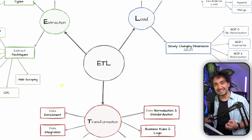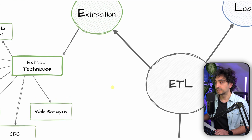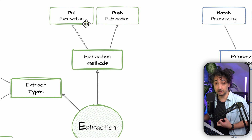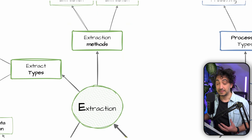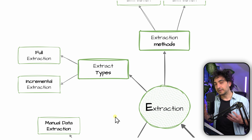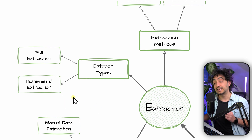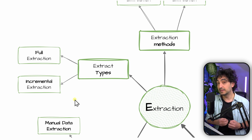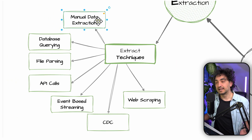Now let's look at an overview of the different techniques and methods in ETL. Starting with Extraction: we either pull data from the source system, or the source system pushes data to the data warehouse — those are the two main extraction methods. Then we have two types: full extraction, where we load all records every day, or incremental extraction, where we identify only the new or changed data to load.